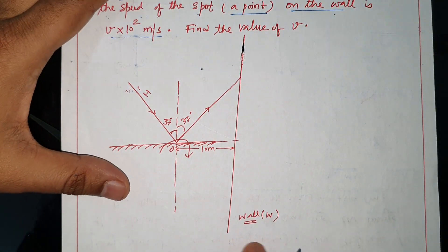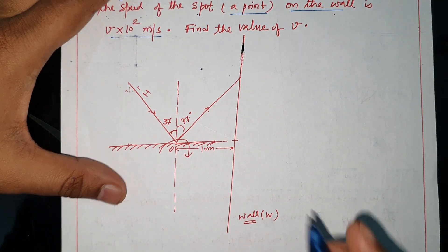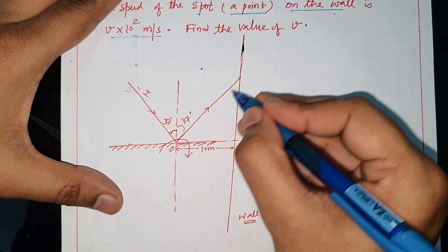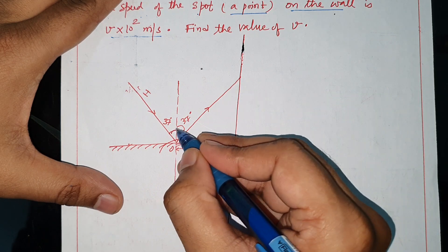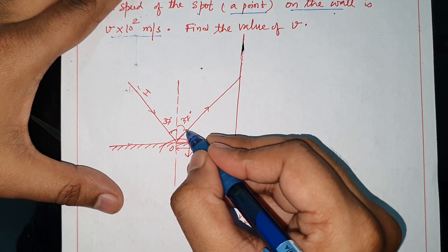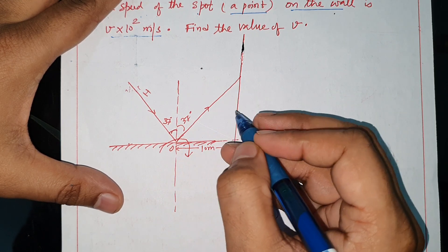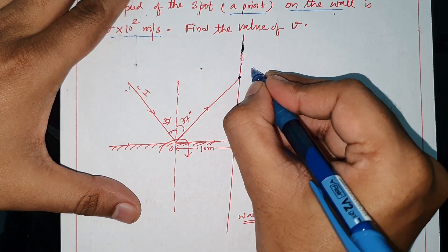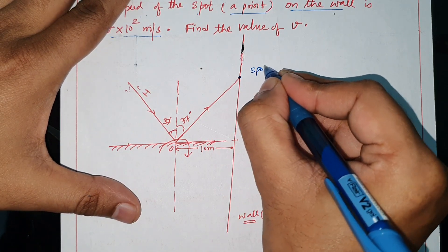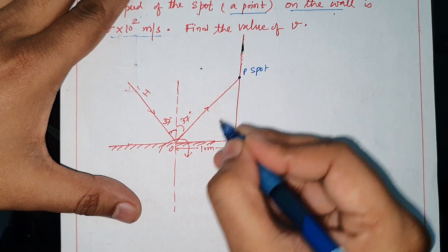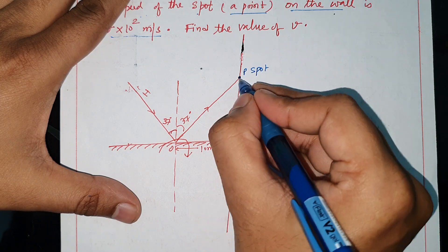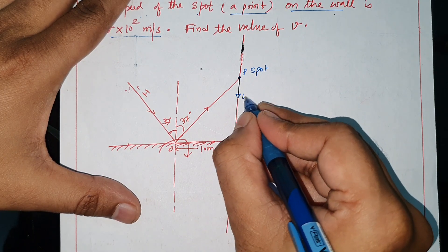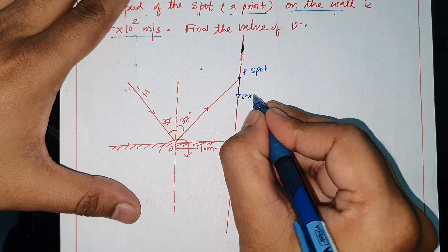Just understand. Here light is incident and this is reflected. When the angle is 37°, the reflected angle is also 37°. Now the mirror rotates, so this spot moves. Here is point P, and here is the speed of the spot, V×10².